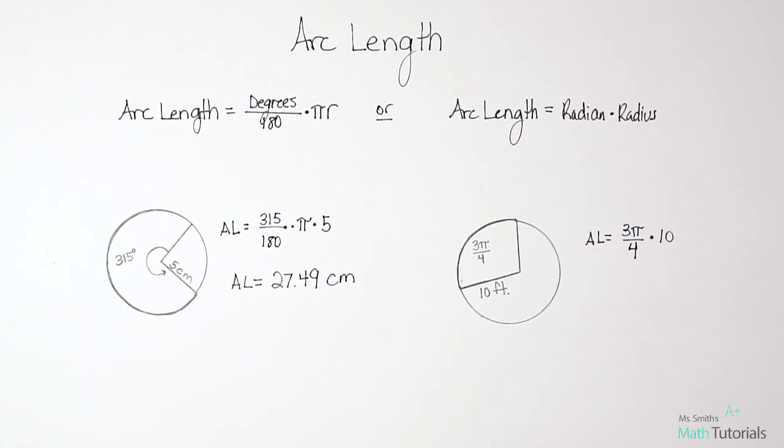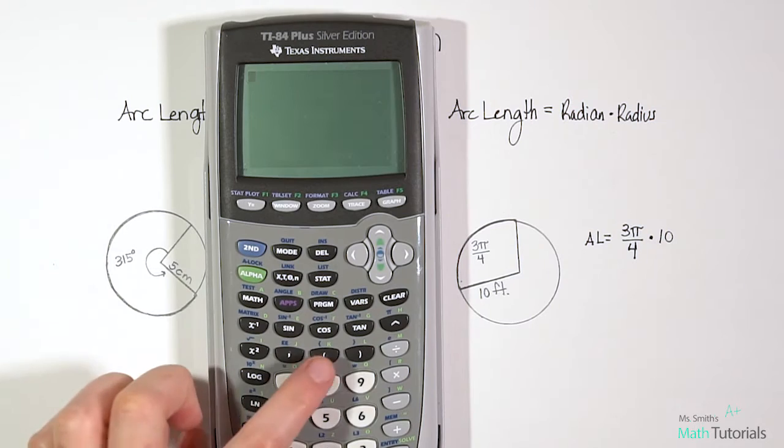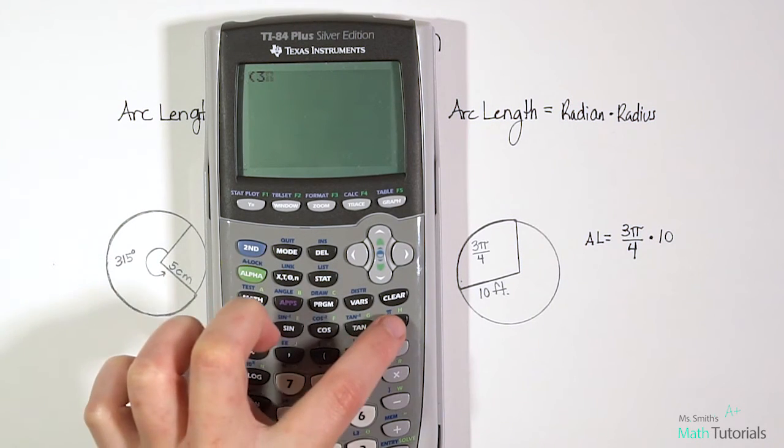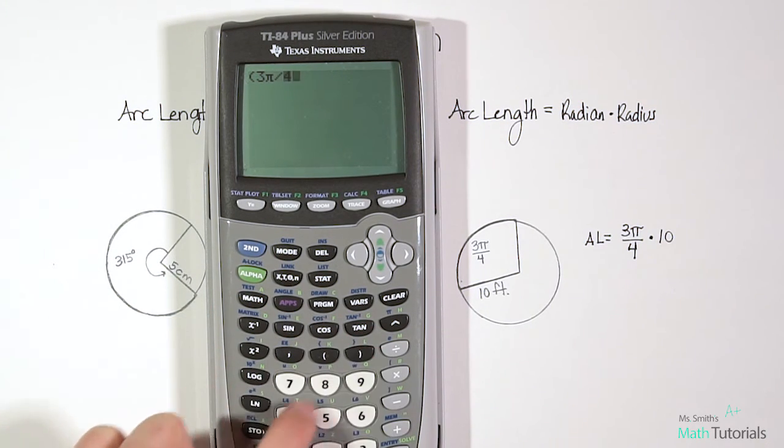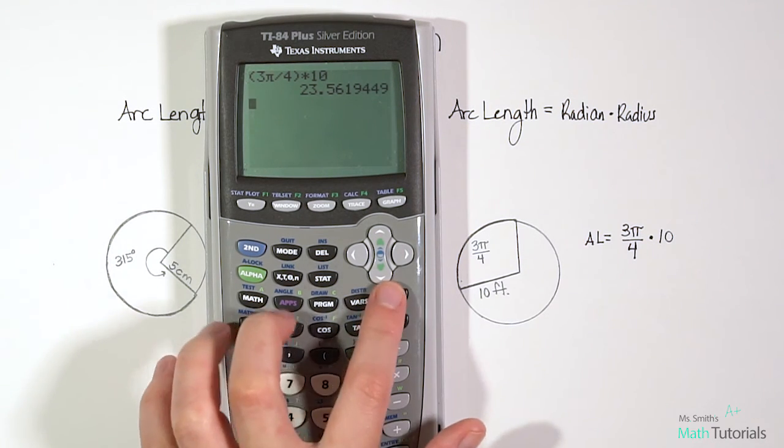And then we can again just type that straight into the calculator. So we'll do parenthesis 3 pi divided by 4 times 10. And we get 23.56 if we round to the nearest hundredth.